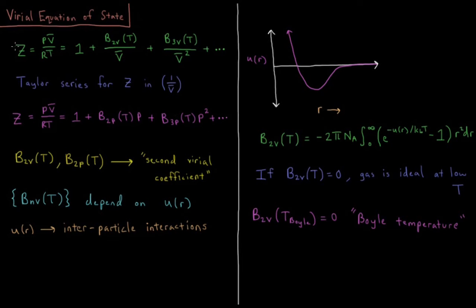So we have our Z is going to be defined here as a Taylor series in 1 over molar volume, which 1 over molar volume you might notice is the density. So we have 1 plus this coefficient B2V of T divided by V bar plus B3V of T divided by V bar squared, and then the series would continue after that, B4V over V cubed, et cetera.